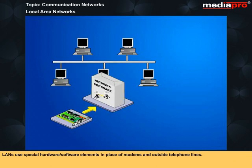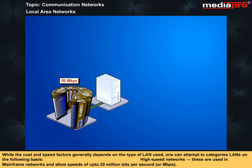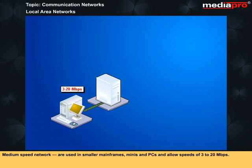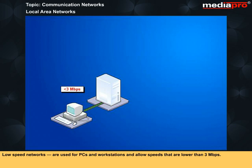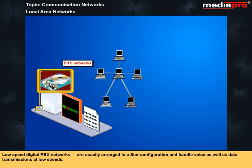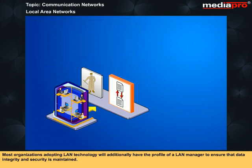LANs use special hardware and software elements in place of modems and outside telephone lines. LAN types can be categorized by speed: high-speed networks used in mainframe networks allow speeds of up to 20 million bits per second (MBPS); low-speed networks used for PCs and workstations allow speeds lower than 3 MBPS; and low-speed digital PBX networks are usually arranged in a star configuration and handle voice as well as data transmissions at low speed. Most organizations adopting LAN technology will additionally have a LAN manager to ensure data integrity and security.